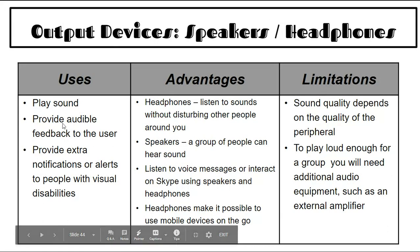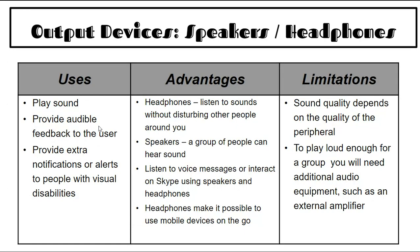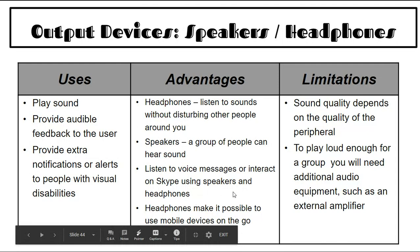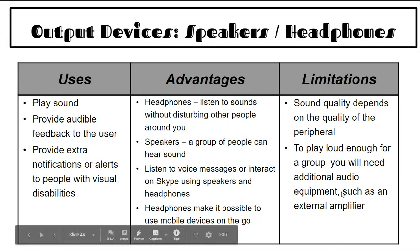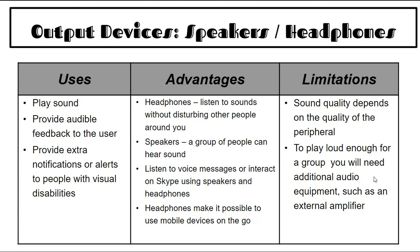Speakers and headphones are used to play sound and provide audible feedback. Headphones allow you to listen without disturbing others; speakers let a group hear the sound. They provide extra notifications for people with visual disabilities and make mobile device use on the go easier for calls or Zoom. Limitations: sound quality depends on the quality of the peripheral. To play loud enough for a large group, you need additional audio equipment such as an external amplifier.